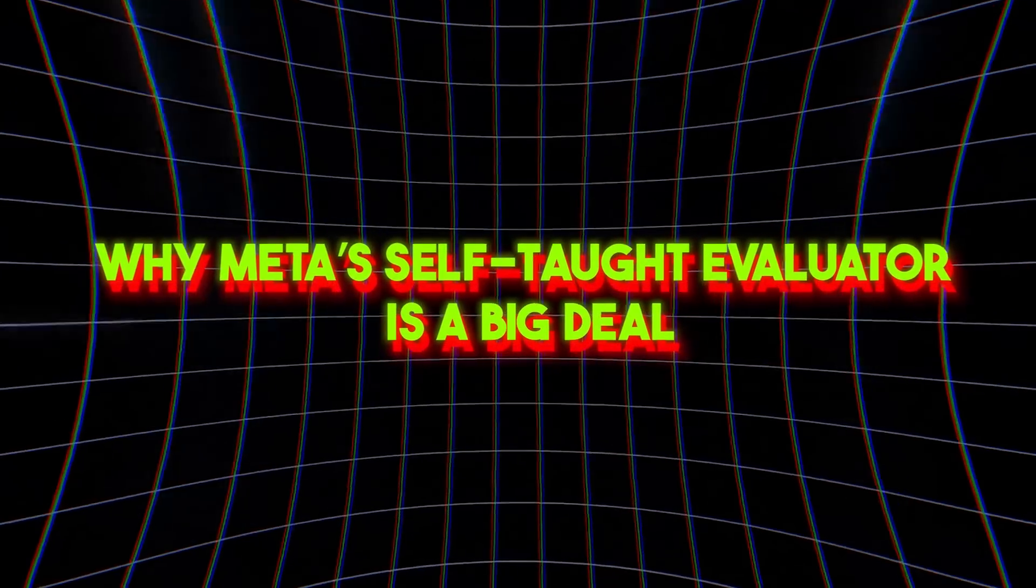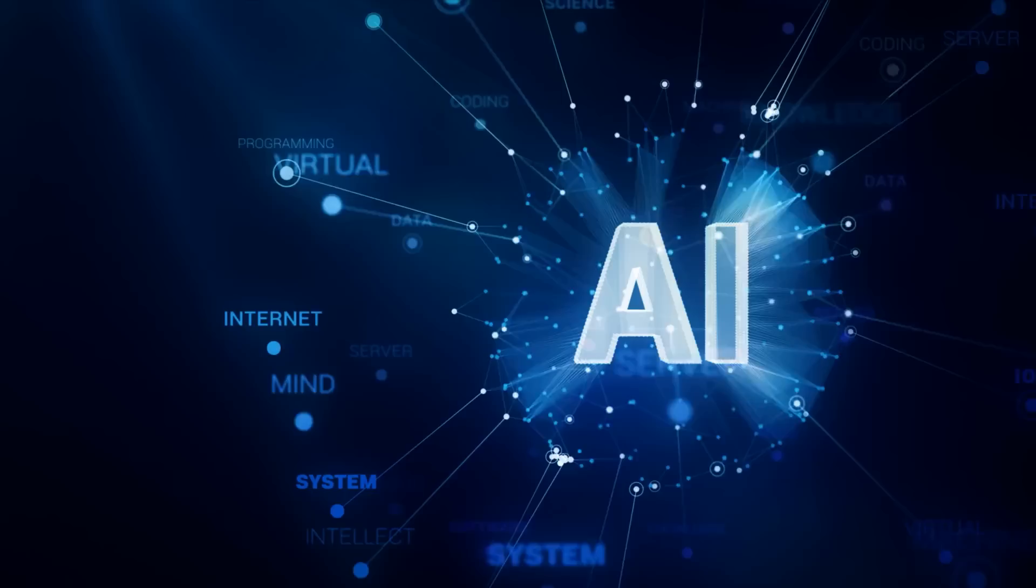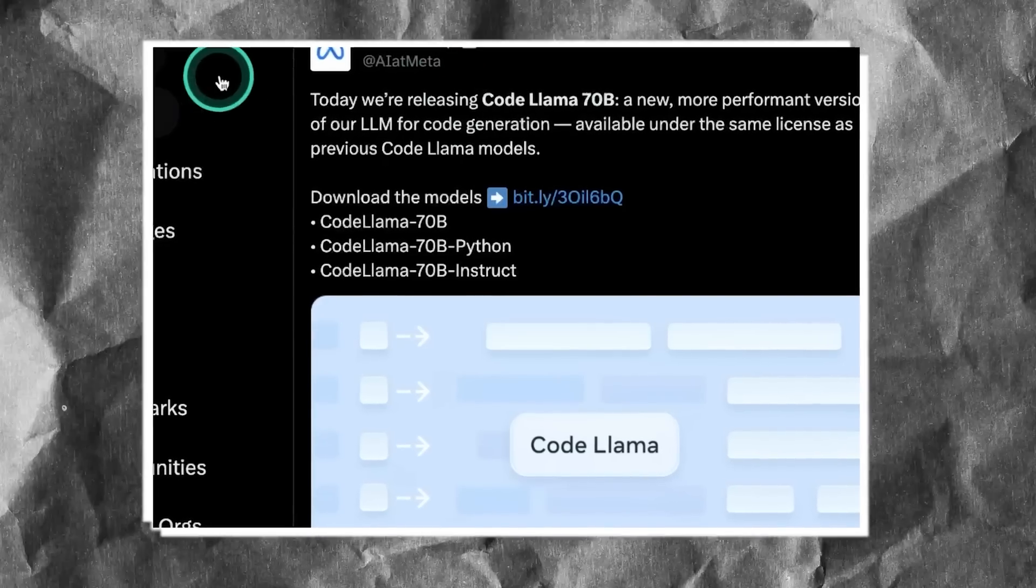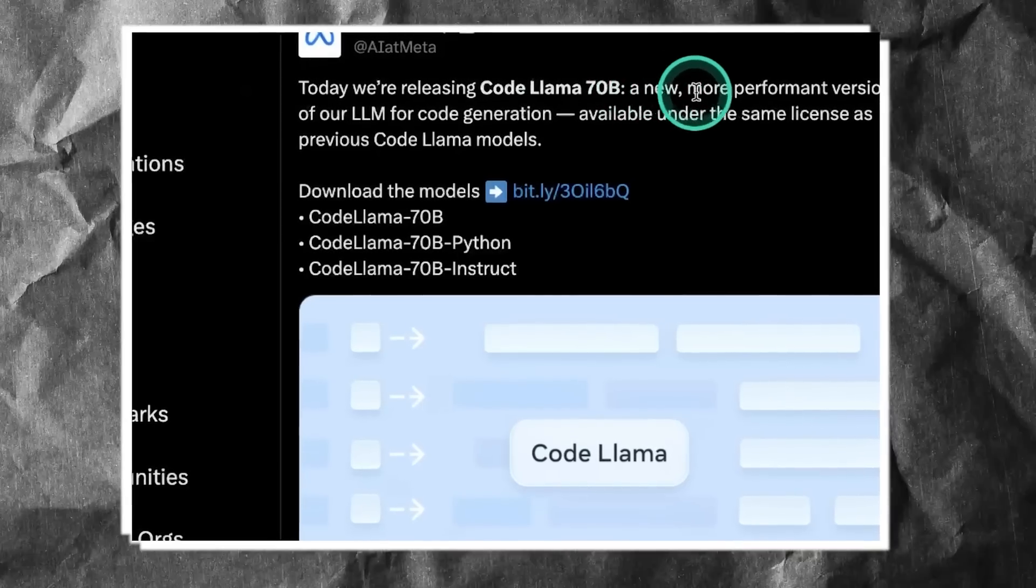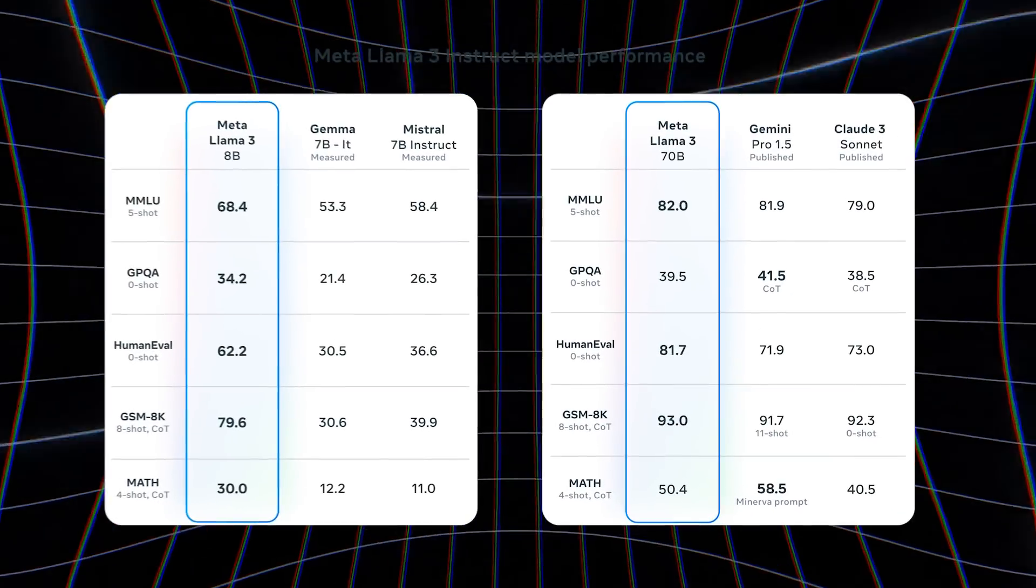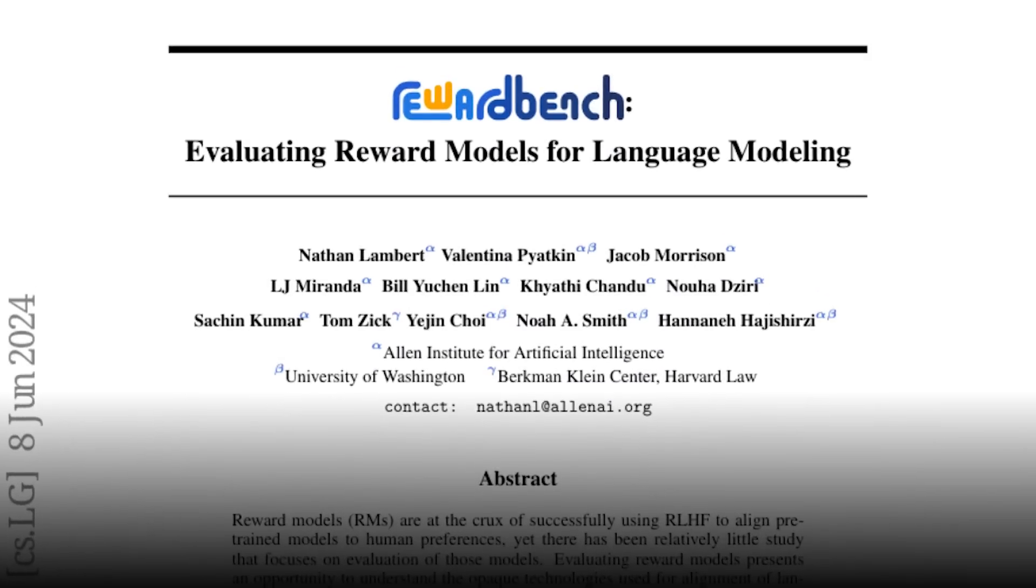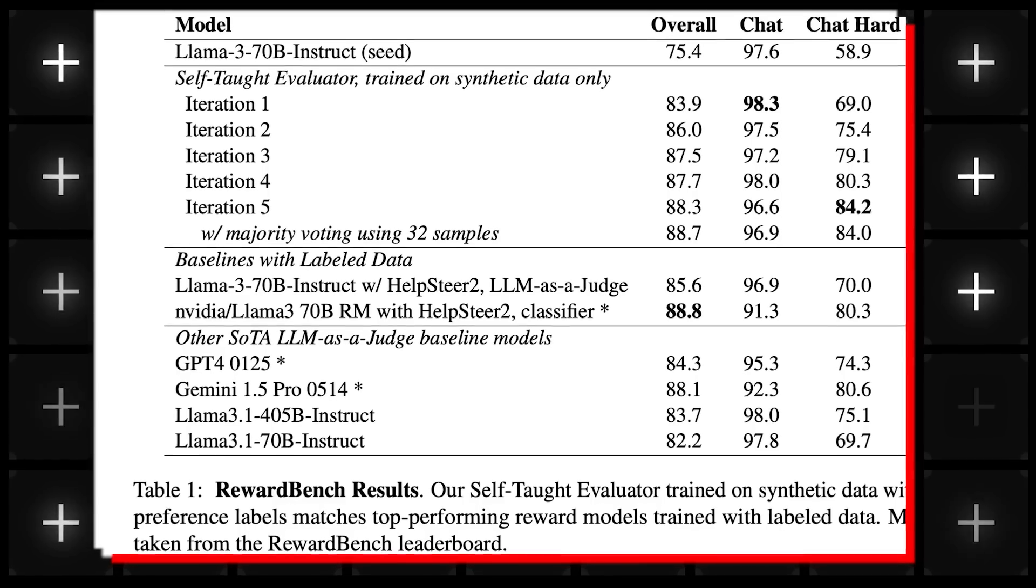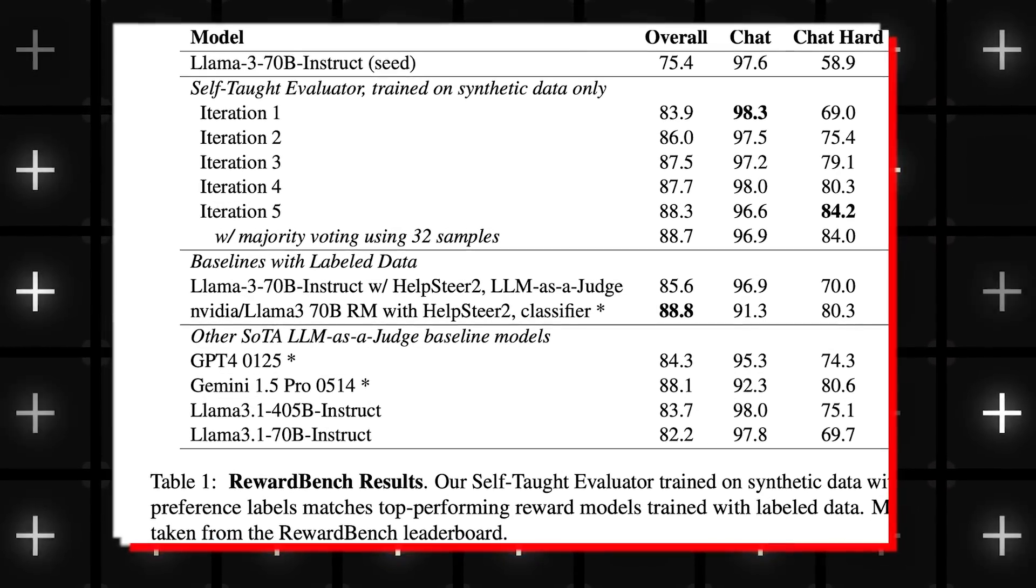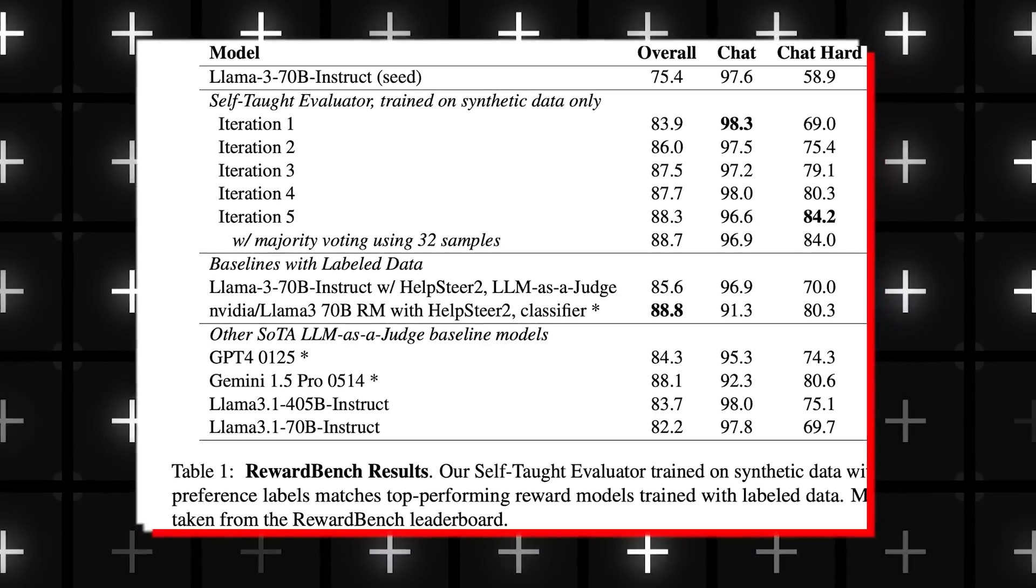Why Meta's self-taught evaluator is a big deal. Now, you might be wondering, why should I care? Well, the results are speaking for themselves. Meta's team tested this self-taught evaluator with the Llama 3 70B Instruct model, which is already a powerhouse. They put it through its paces with something called the Reward Bench benchmark, a tool that checks how well AI models perform. The results? The accuracy of the base model jumped from 75.4% to an impressive 88.7% after just five rounds of self-teaching.